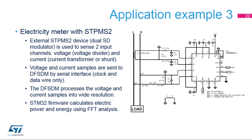This example shows a typical one-phase electricity meter design using an STPMS2 device and STM32 microcontroller. The STPMS2 is a dual-channel Sigma Delta modulator with voltage and current channel inputs, featuring a programmable gain amplifier to cover a wide range of measured currents. Sampled 1-bit data are sent via serial interface to the DFSDM. Both voltage and current 1-bit data samples are sent on the same data wire, with voltage sampled on the rising clock edge and current sampled on the falling clock edge. The clock is provided by the DFSDM and can run up to 4 MHz.